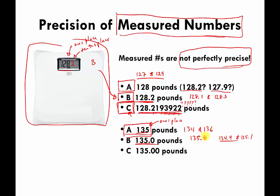So the scale calls it 135.0, but there may be other digits hidden after the zero that the scale can't detect — it just happened to land on zero. Scale B is measuring more precisely but still not perfectly. Even Scale C knows down to the second digit past the decimal, but not beyond. You have to realize that even measurements showing 0.0 or 0.00 are still not perfectly precise.